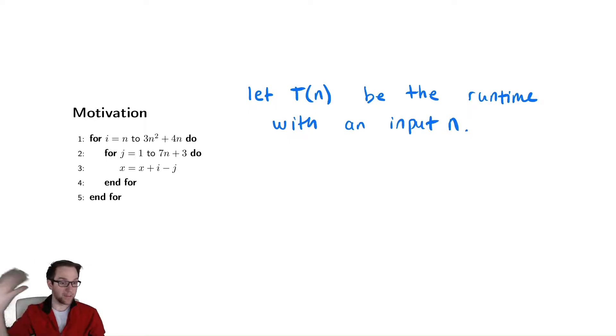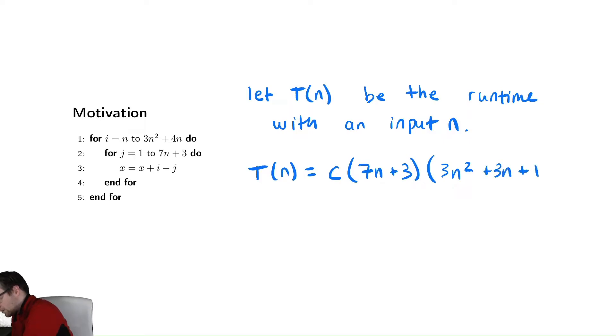This is, we will typically define something like this. Again, we're not going to talk about how you find this, but you might be able to later in this class compute that the runtime here looks like some constant times 7n plus 3 times 3n squared plus 3n plus 1.